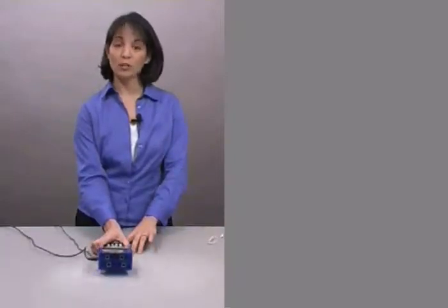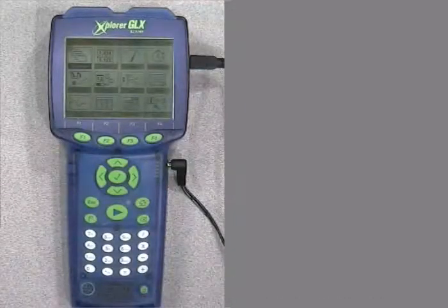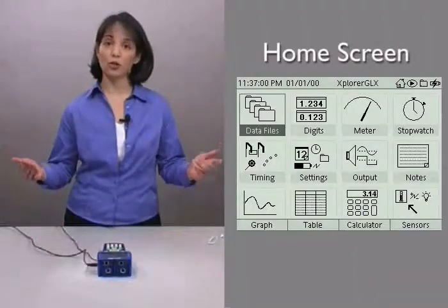The first thing you want to do is make sure that your Explorer GLX is powered on. You do that by pushing the power button right here. When it does turn on, it opens to this home screen.